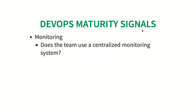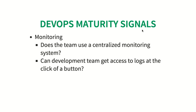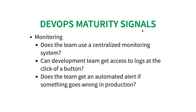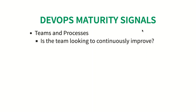The next set of maturity signals are from the perspective of monitoring. Does the team use a centralized monitoring system? Can the development team access logs at the click of a button? Does the team get an automated alert if something goes wrong in production — if a server or application goes down?